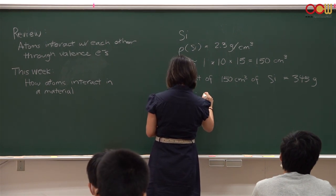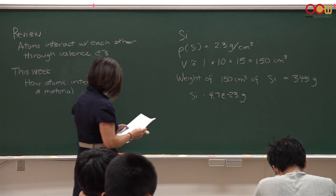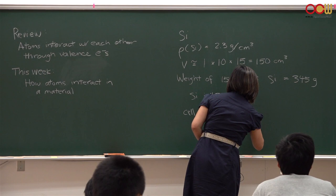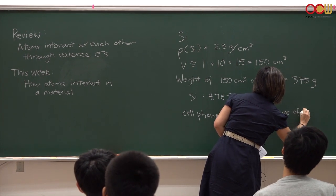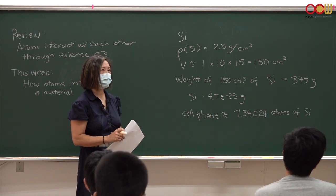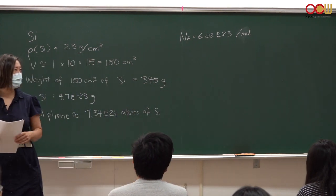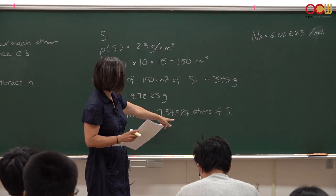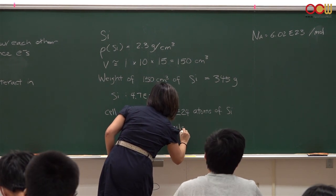So you have 345 grams of silicon. You also need the atomic mass. Silicon's atomic mass is 4.7 × 10⁻²³ grams per atom. So you take 345 divided by 4.7 × 10⁻²³ and you get roughly 7 × 10²⁴ atoms of silicon. If you convert this into moles using Avogadro's number, that comes out to around 12 moles of silicon.